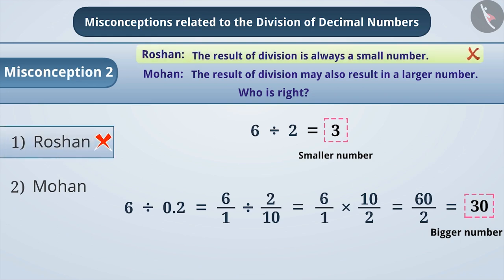Since Mohan understood correctly that the result of division can also be a large number, Mohan's understanding is correct. Hence, option 2 is correct.